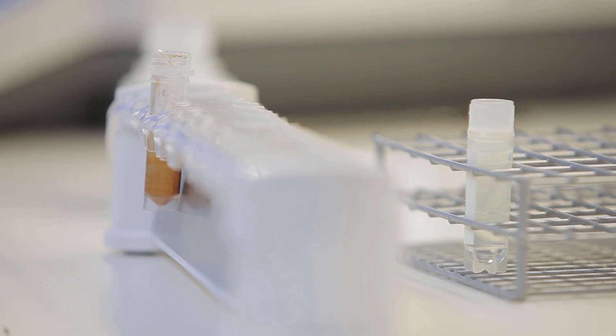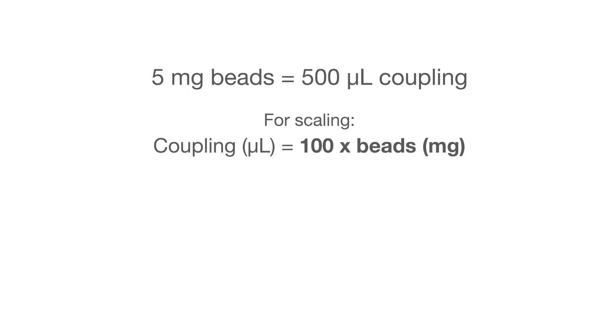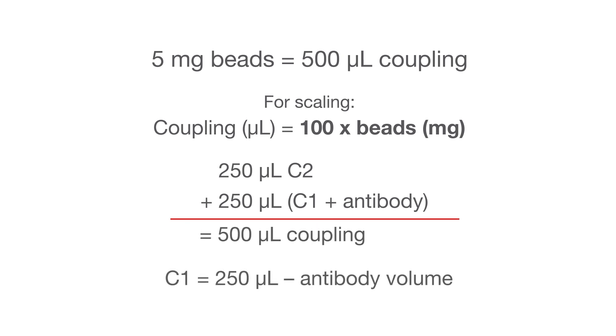All washing steps are done like this. As a guideline, the total coupling volume in microliters is 100 times the amount of beads in milligrams. Half of the coupling volume is C2 buffer, and the remaining half is your antibody solution diluted in C1 buffer. Thus, you'll have consistent coupling conditions independent of your antibody concentration.